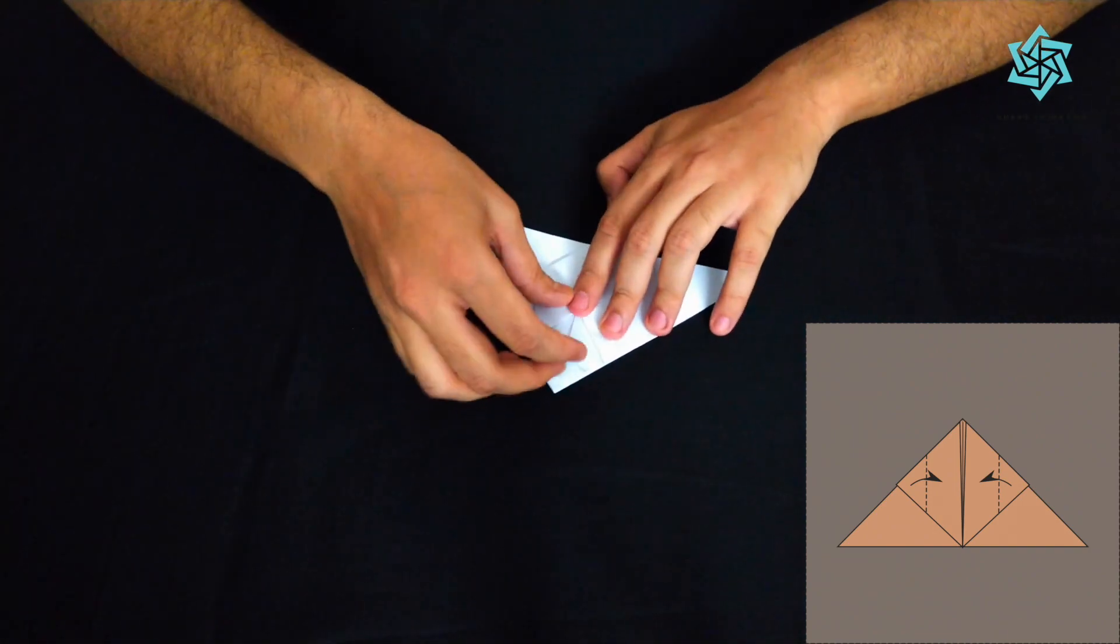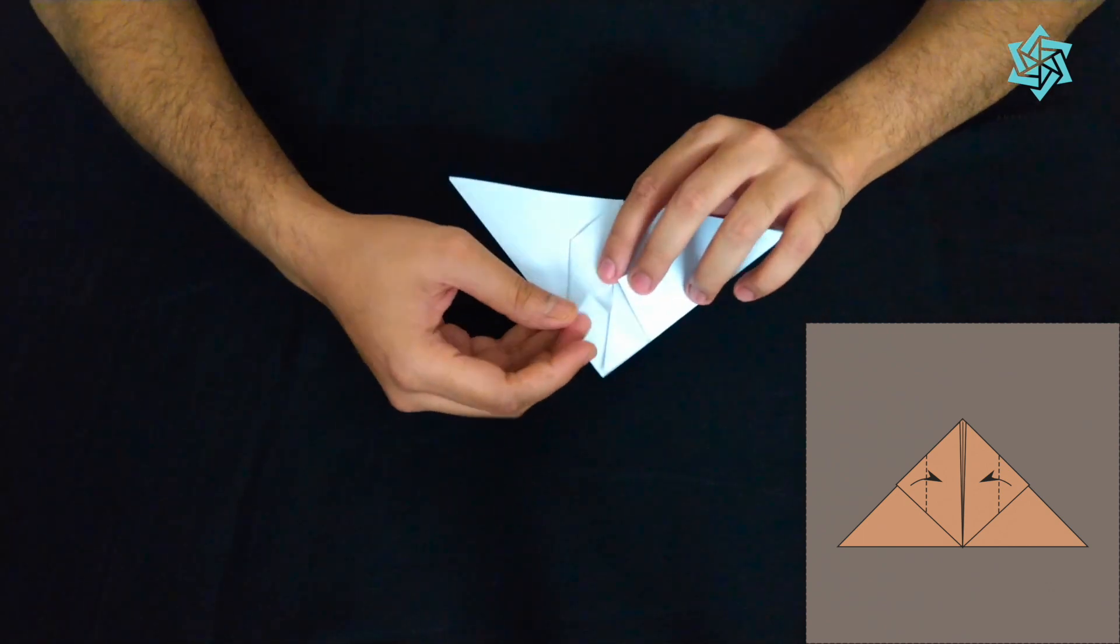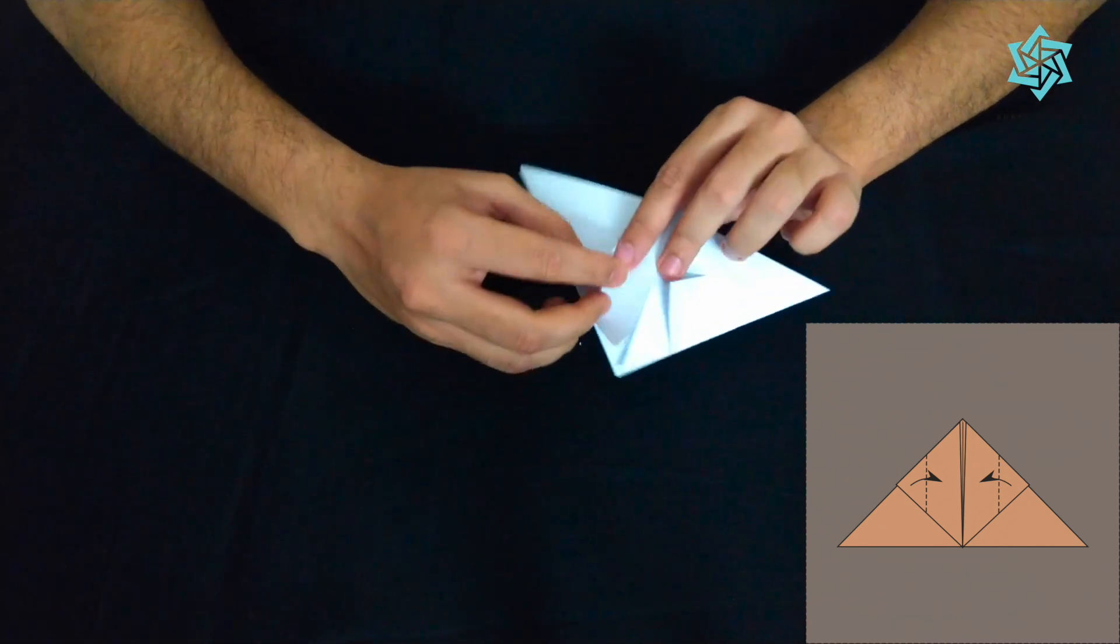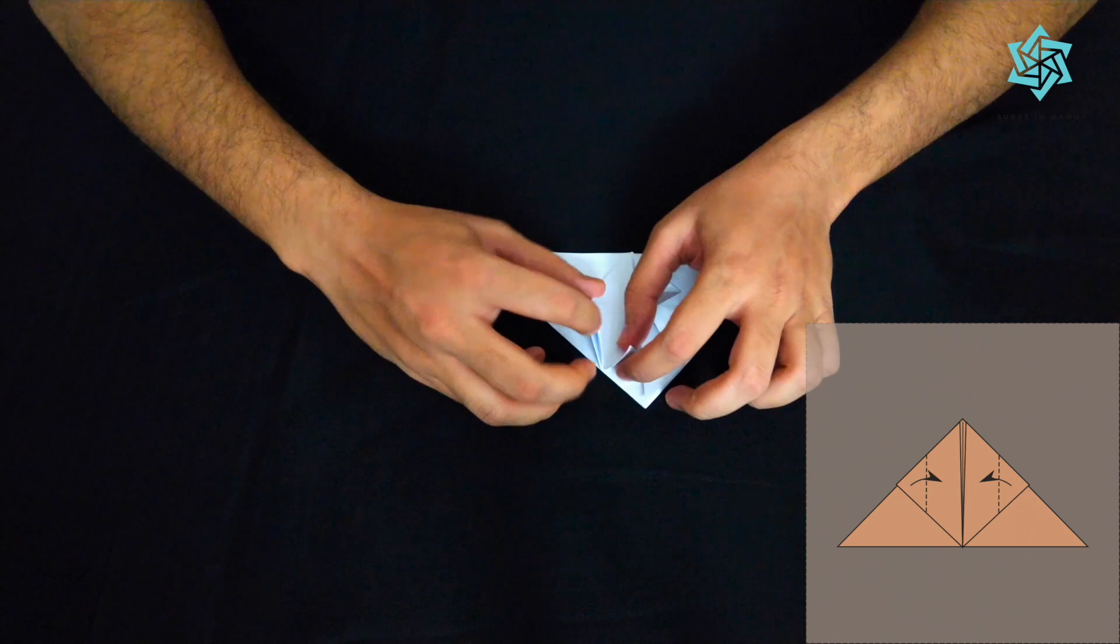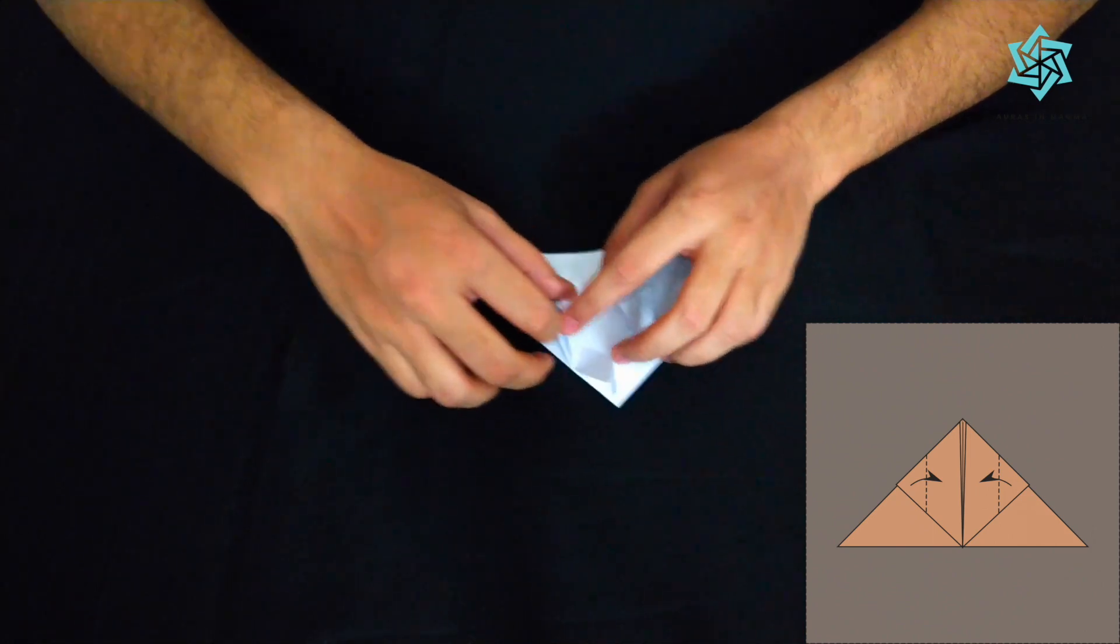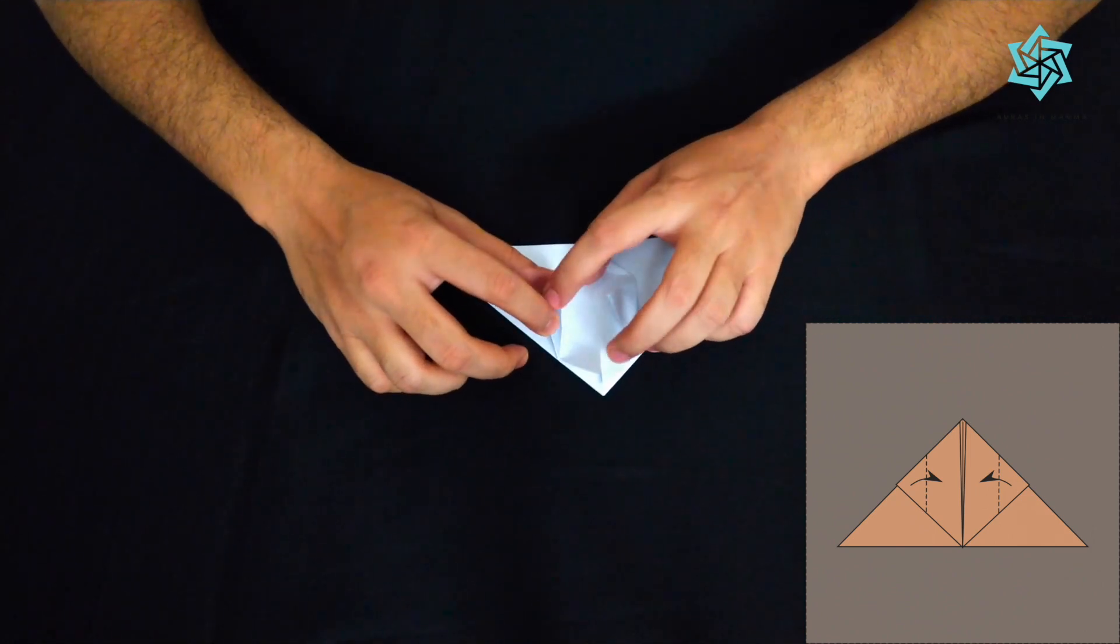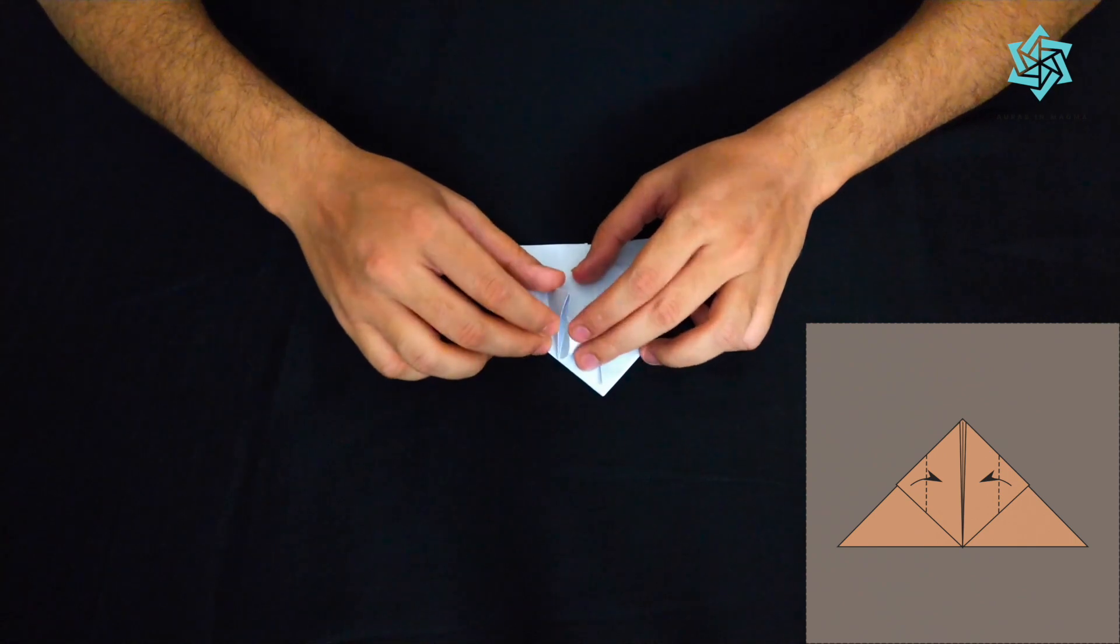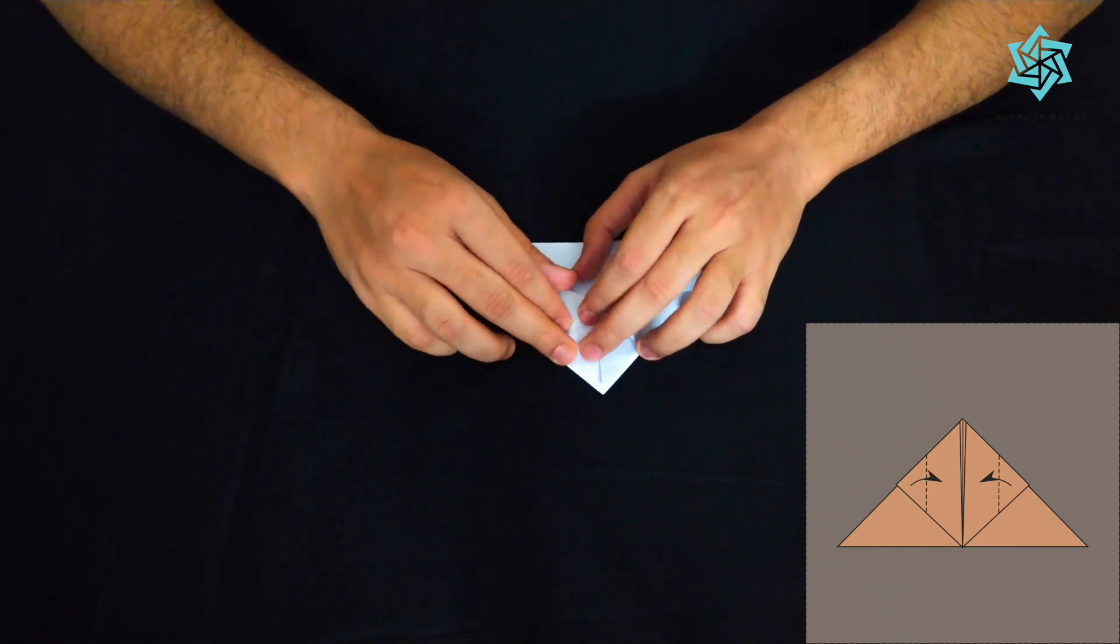Okay and then complete the water bomb, we'll just push these flaps. Now you can see that there's this space formed over here. There's this space formed over here. So we can put these flaps inside the space as we do in the water bomb.